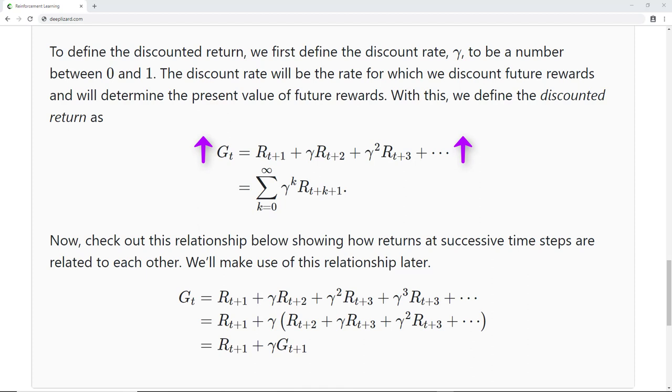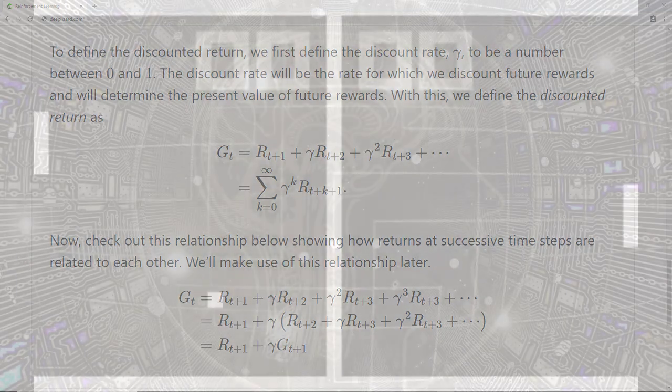While the agent does consider all the expected future rewards when selecting an action, the more immediate rewards influence the agent greater than rewards that are expected to be received further out due to the discounting factor. Next time, we'll be building on the ideas from our introduction to MDPs and the discounted return to see how we can measure how good any particular state or any particular action is for the agent. Thanks for contributing to Collective Intelligence, and I'll see you in the next one.